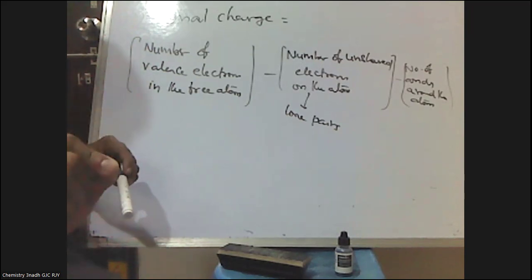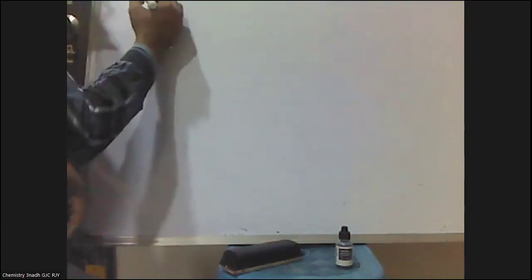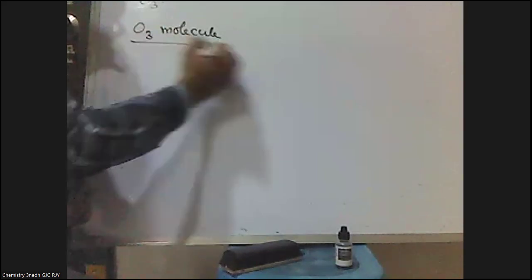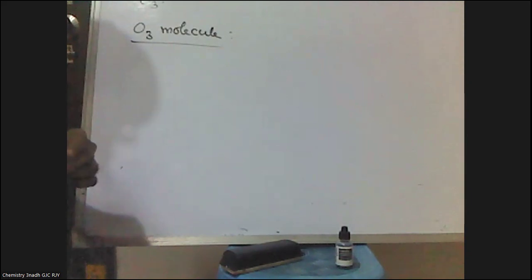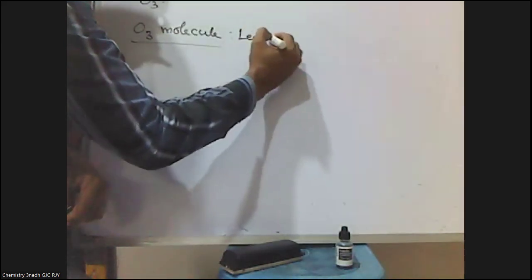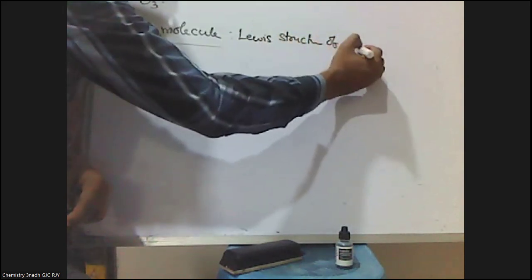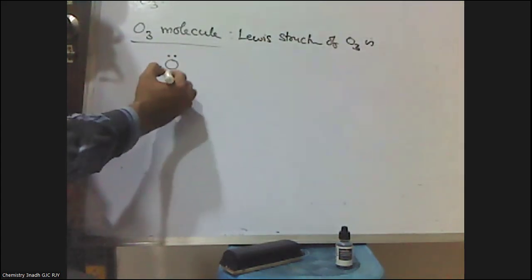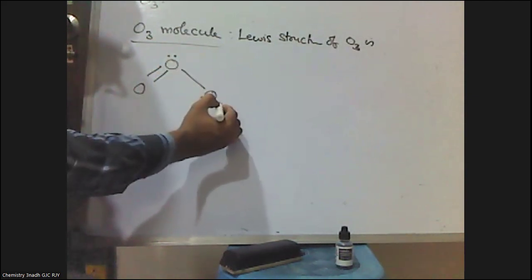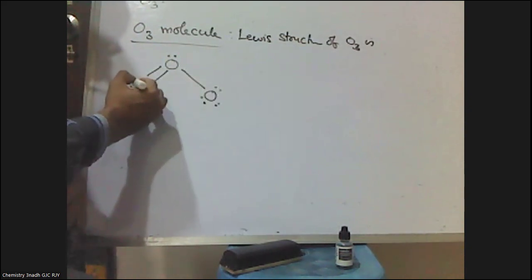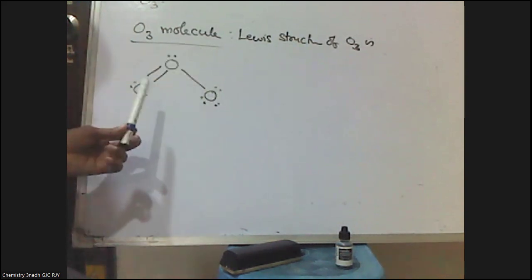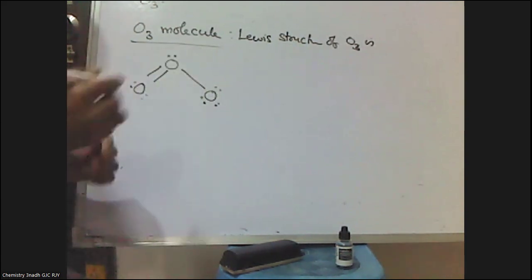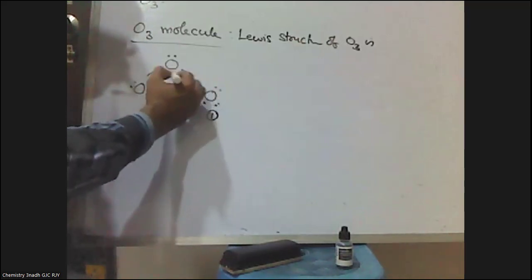Now let me explain how to calculate the formal charge by taking one example. Let me consider the ozone molecule. I will calculate the formal charge on each oxygen atom. We know that the Lewis structure of ozone is: a central oxygen atom double-bonded to one oxygen and single-bonded to another, with lone pairs on each terminal oxygen. This is the Lewis structure of the ozone molecule. I am giving numbers to these oxygens: one, two, and three.